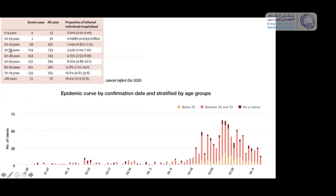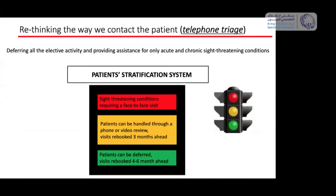It is recently published in Lancet Infectious Diseases that even between 40 and 60 years old, there is a significant percentage of patients who can be hospitalized. We need a patient stratification system to know which patients must be seen face-to-face, which can be rebooked in three months, and which in four to six months.